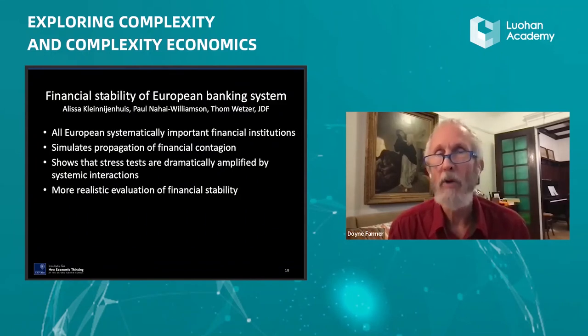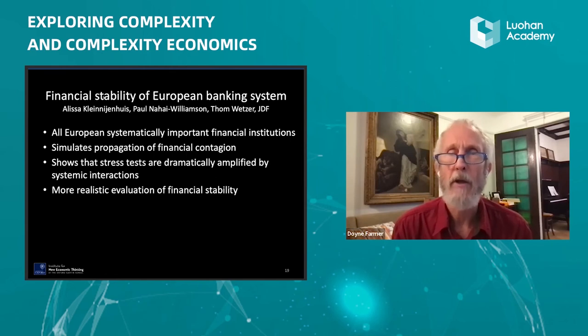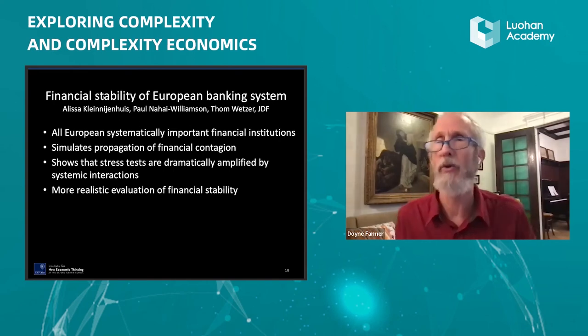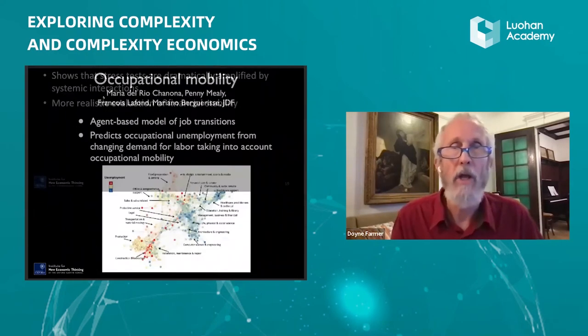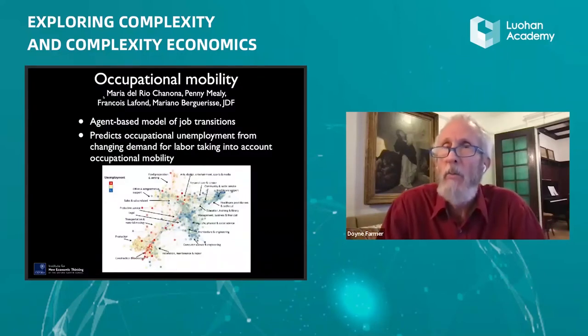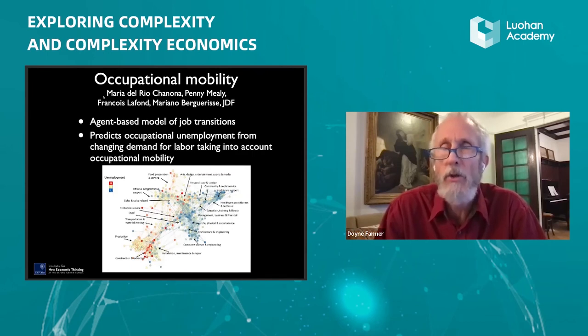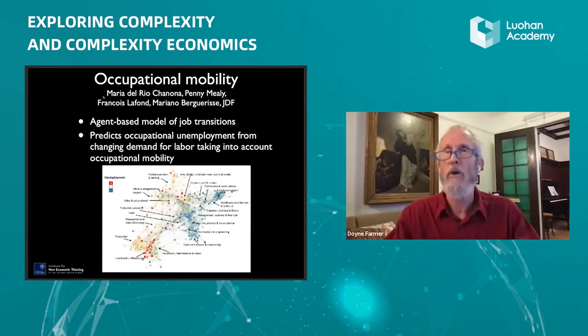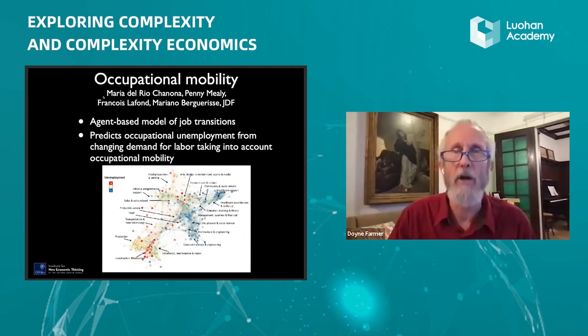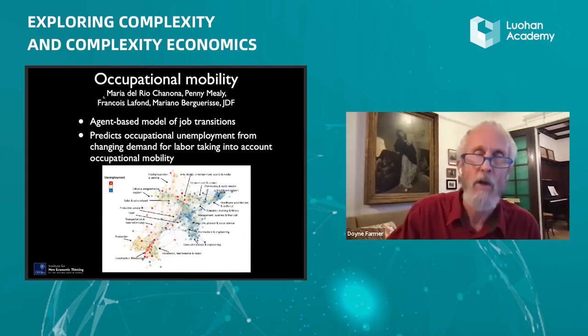We built a model for the financial stability of the European banking system that looks at detailed balance sheets of banks and simulates what banks will do when they come under stress. We have a model of occupational mobility that looks at the factors that cause workers to change occupations and tracks diffusion through the occupation space through time, based on a simplified urn model for hiring and firing workers.